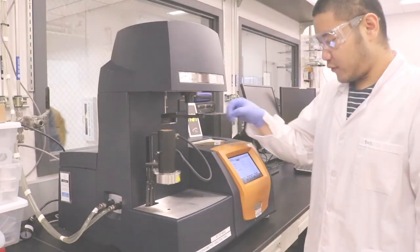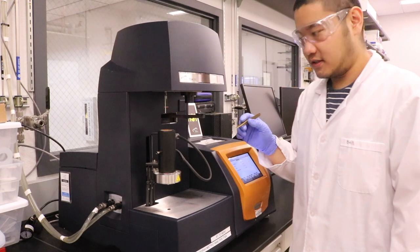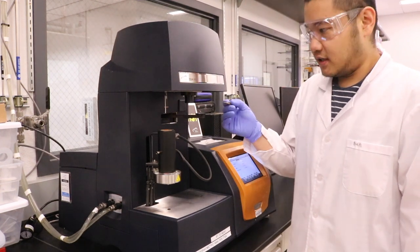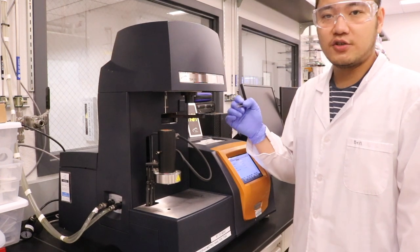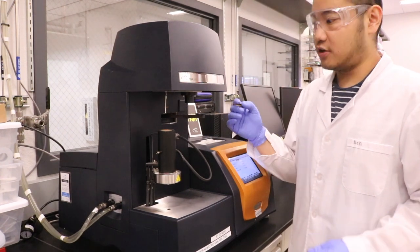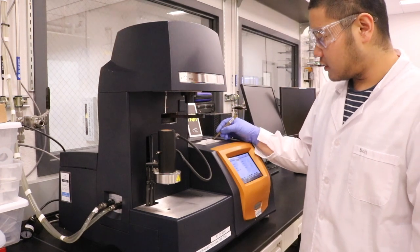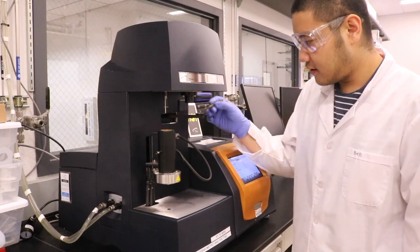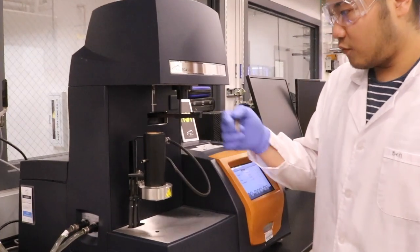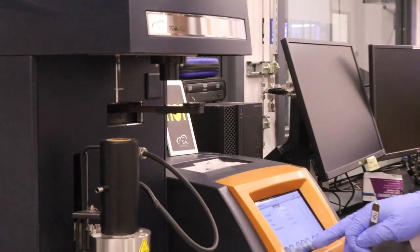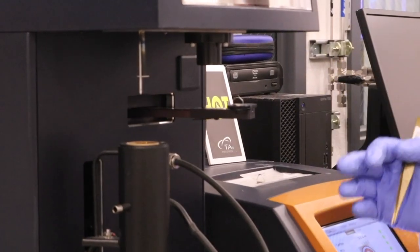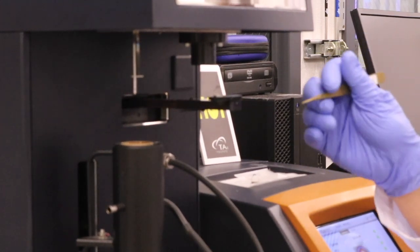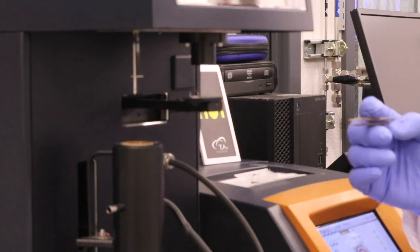So here we have thermogravimetric analysis equipment. What this machine does is it will analyze what composition you have for each nanoparticle polymer composite. We'll first load the sample onto this pan here, and then we will load this pan.